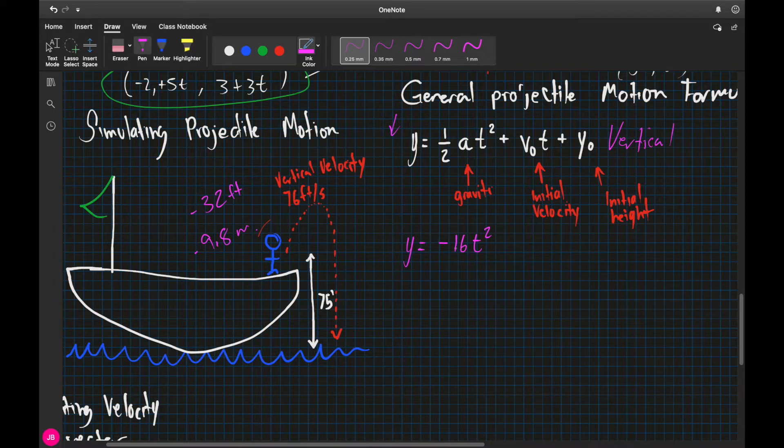So if we're on Earth, we're probably going to be dealing with negative 16t squared or 4.9 meters when we're talking about meters. Now, the initial velocity is going to change. So depending on whatever the problem says, we need to go ahead and plug in our initial velocity.